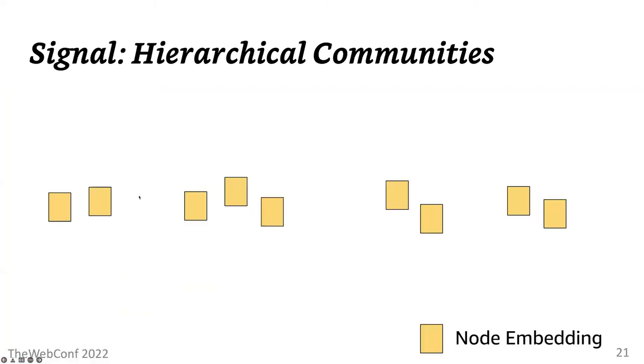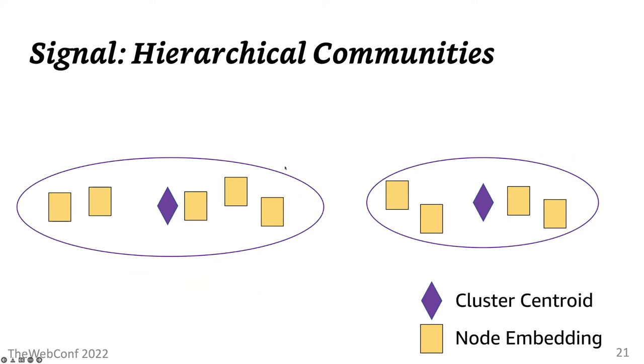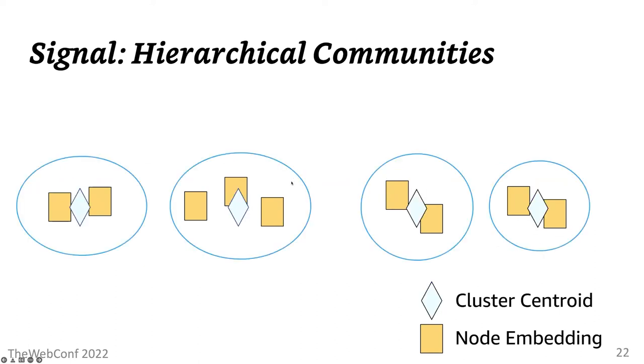In this figure, these boxes denote node embeddings. In CGC, we represent communities as a cluster centroid vector in the same latent space as the entities, so that the distance between an entity and these cluster centroids reflect the entity's degree of participation in different communities. In particular, we consider how the same nodes can be grouped into different number of clusters. For instance, here, these node embeddings are grouped into two clusters, and the same nodes can be grouped into four more fine-grained clusters.